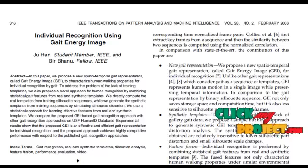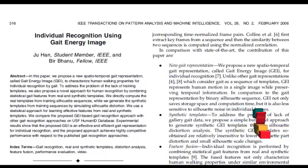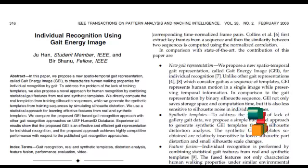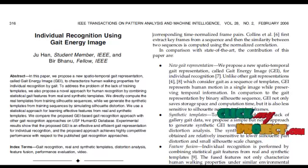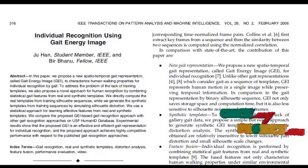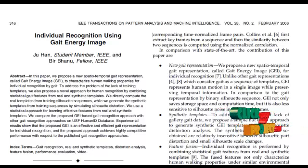Understanding human activities or behavior has long been a goal. The proposed system performs gait feature extraction such as variance, skewness, and kurtosis. The enhanced human silhouettes are smoothed to obtain the gait features. The extracted gait features are classified by RVM, i.e., Relevance Vector Machine Algorithm. The features are extracted and classified.